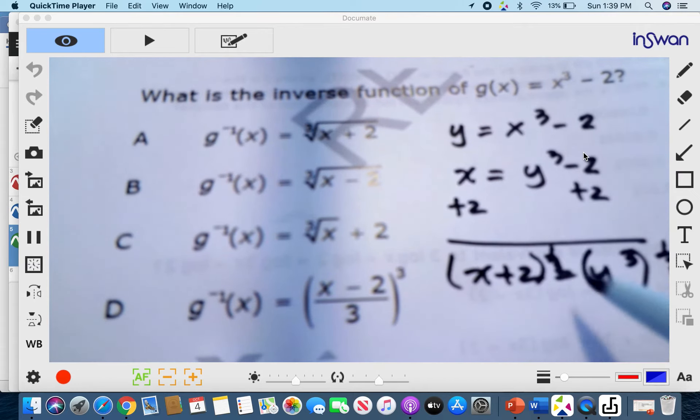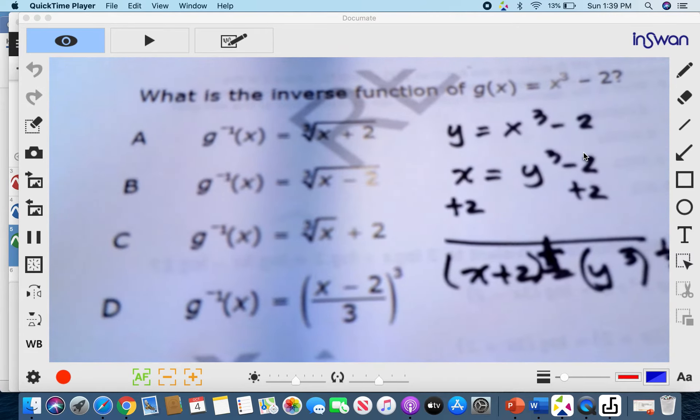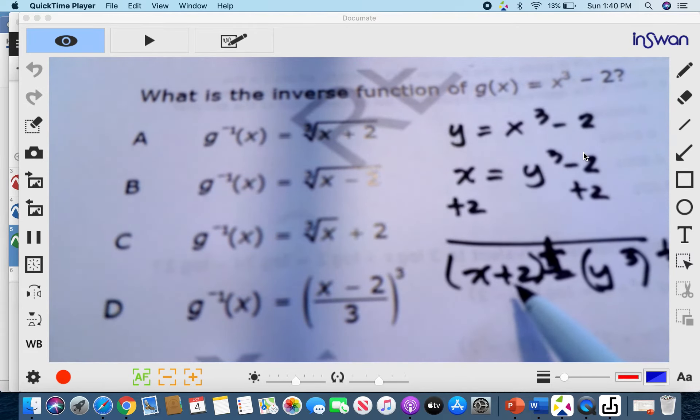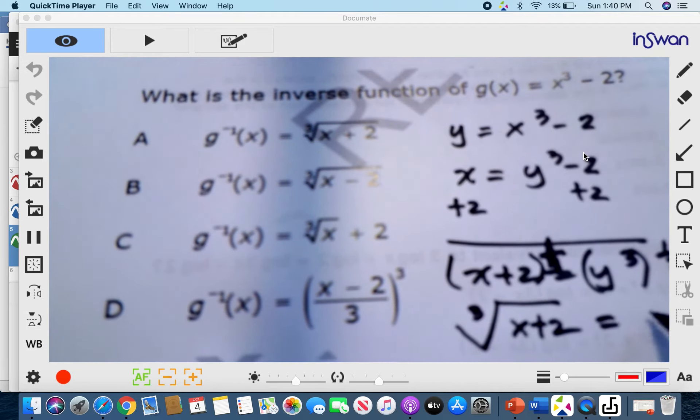Now remember, as I've told you before, radicals are numbers whose exponents are fractions. So this now becomes cube root. So x plus 2 raised to 1 third is the same as getting the cube root of x plus 2, and this now becomes y.